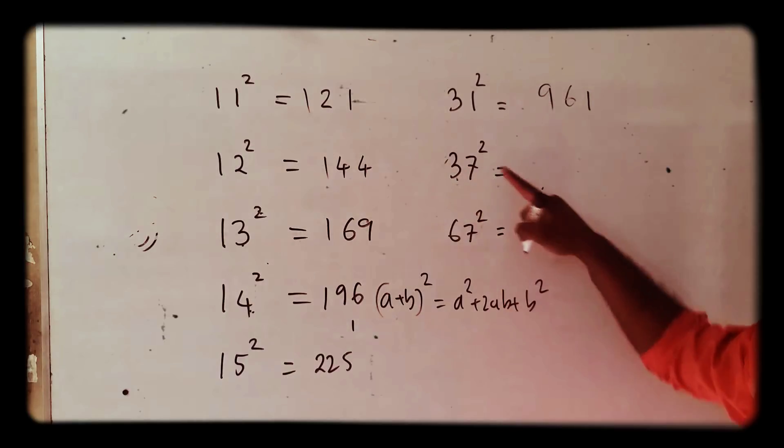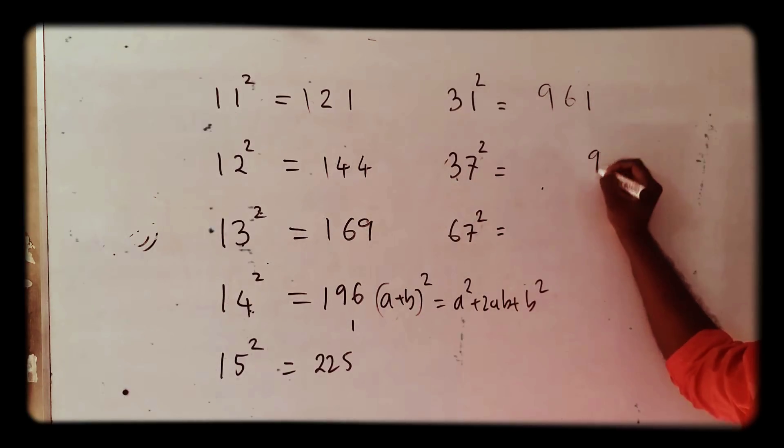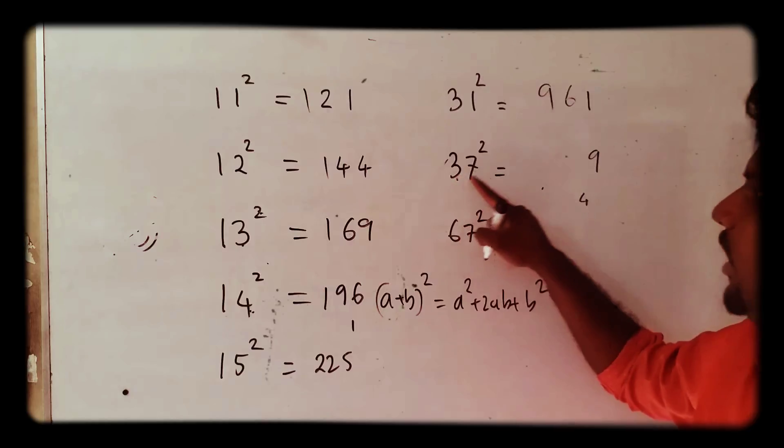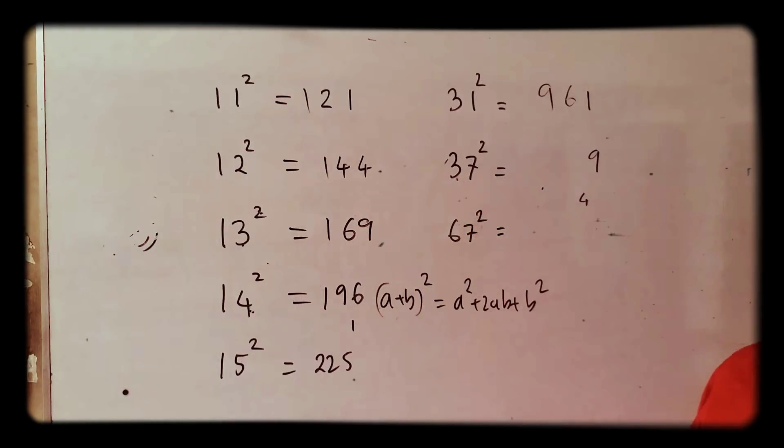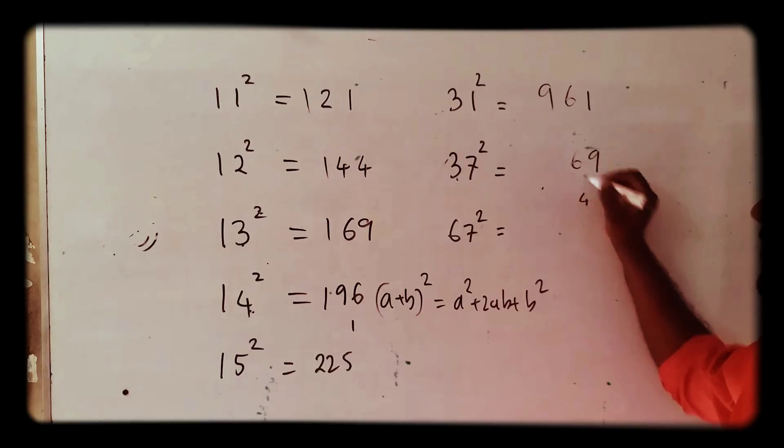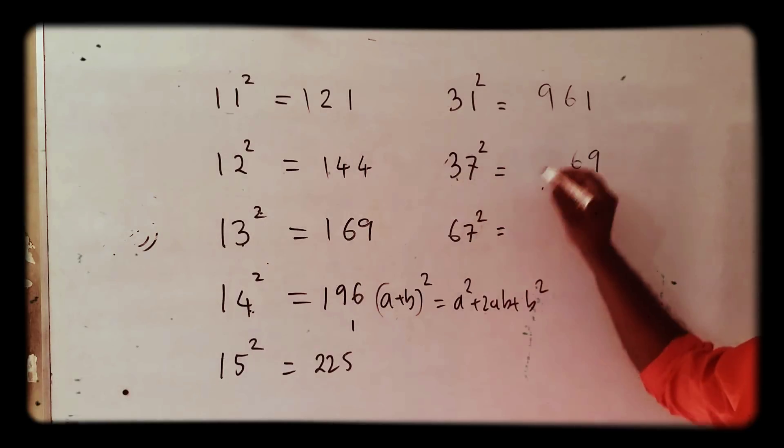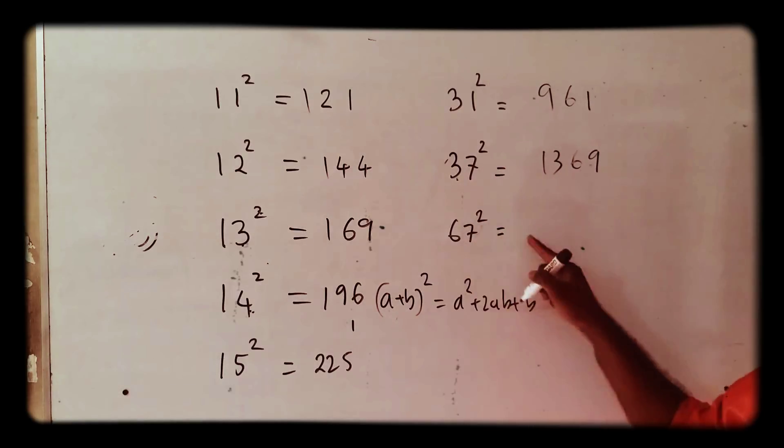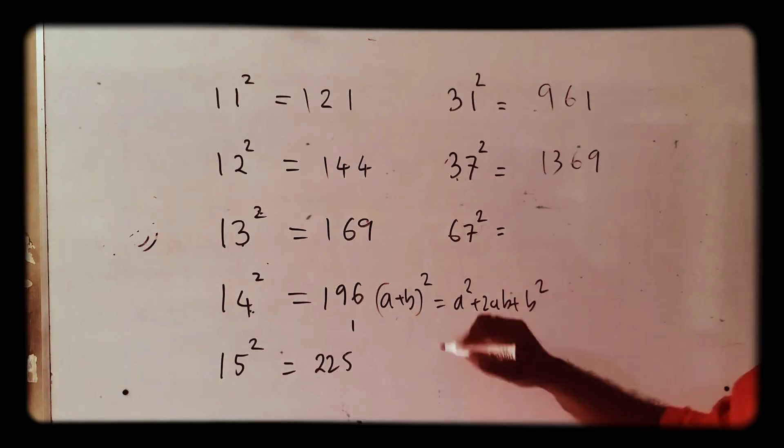37² - 7² = 49, 2 × 3 × 7 = 42. 42 + 4 = 46, then 3² = 9, giving 1369. That's right.